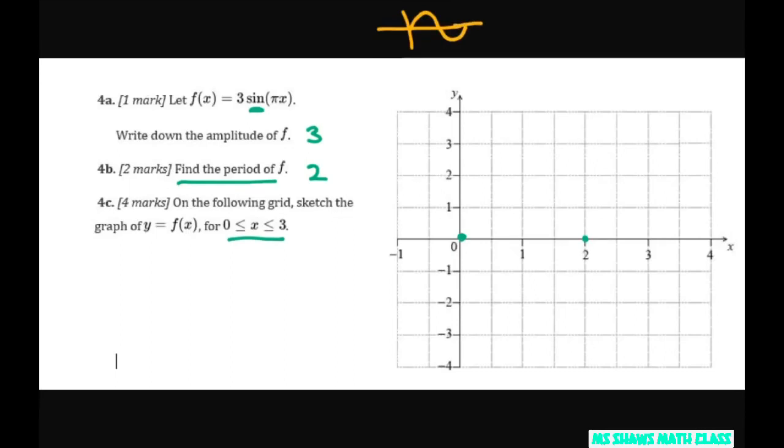So from that we can sketch it. We know our amplitude is 3. So since we're starting at 0 from here you go up to 3, come back to 0, go down to negative 3 and back up to 2. So this would be your curve or your wave.